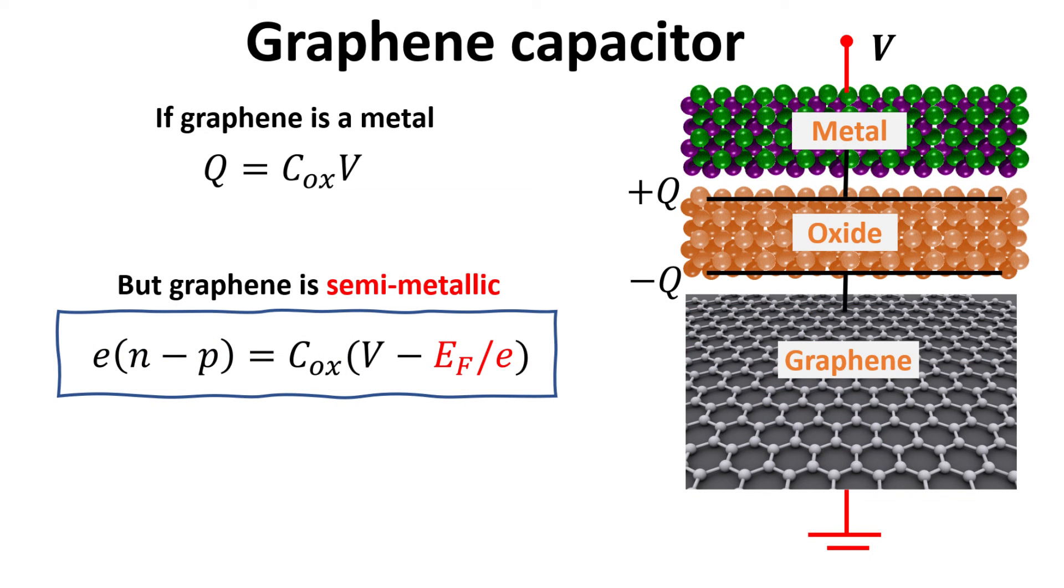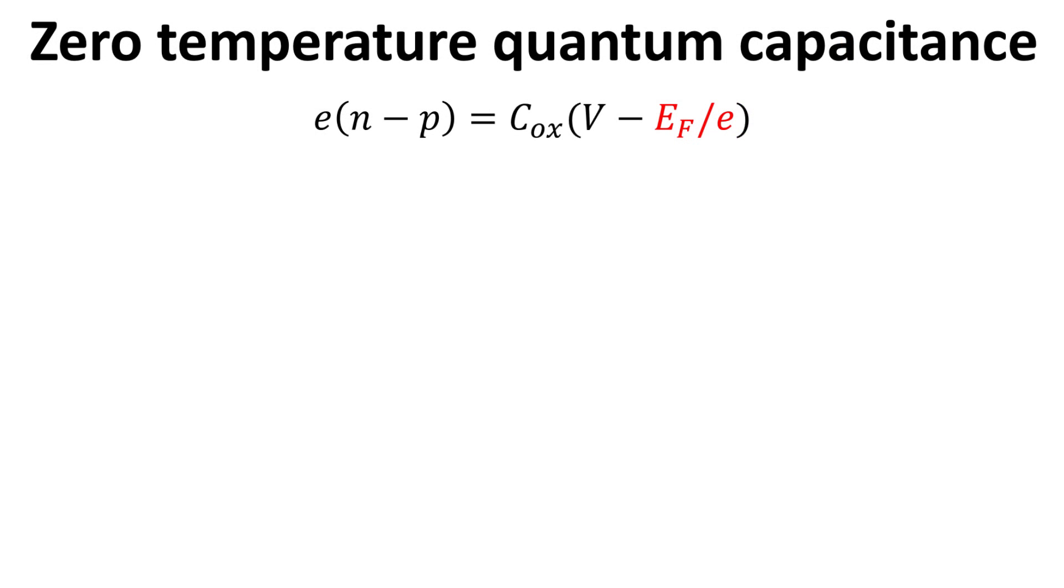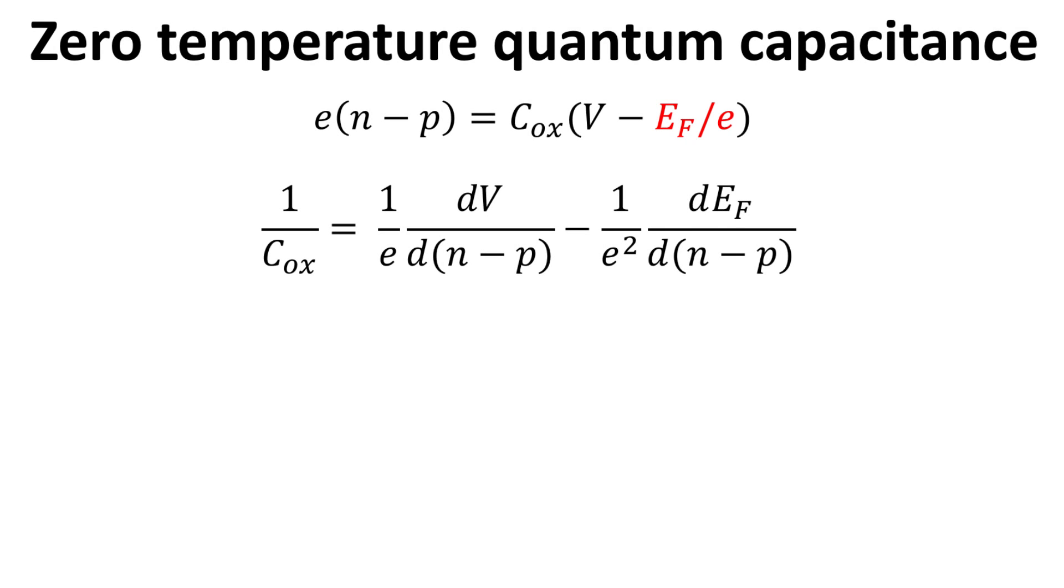Thus, the electrostatic equation in graphene should account for the voltage drop due to the shift in the Fermi level as shown. The charge Q should account for contributions from electrons and holes. Starting from this electrostatic equation for graphene, we first divide throughout with C-ox. Then we differentiate throughout with respect to N-P.